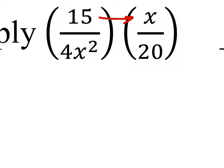Since it's multiplication, we just multiply straight across—multiply your numerators and then your denominators.